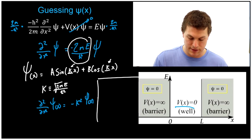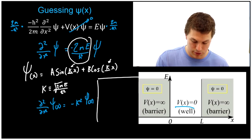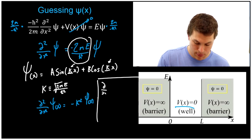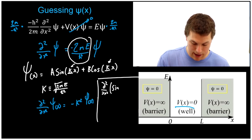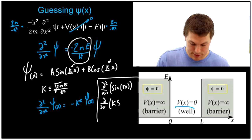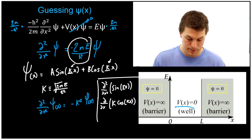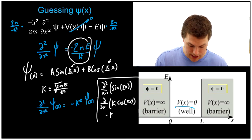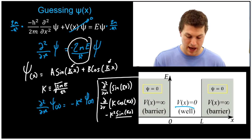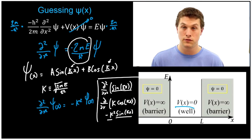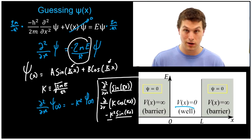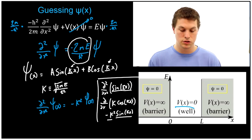Let me show why kappa belongs inside the sine. If I take the double derivative of sine(kappa·x): first derivative gives kappa·cosine(kappa·x) by the chain rule, and the second derivative gives negative kappa squared·sine(kappa·x). This matches exactly what we expect — we take the derivative twice and get back the same function times negative kappa squared. So this is indeed a solution to our Schrödinger equation.